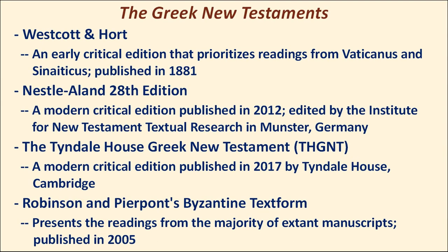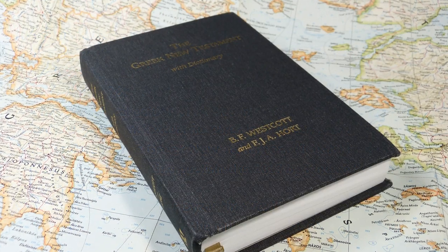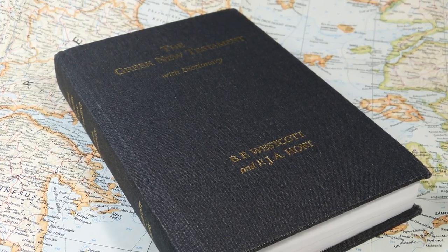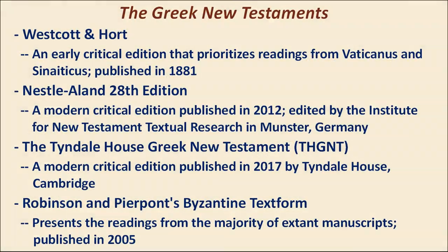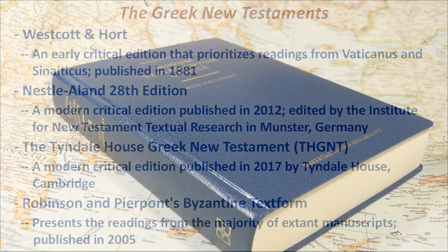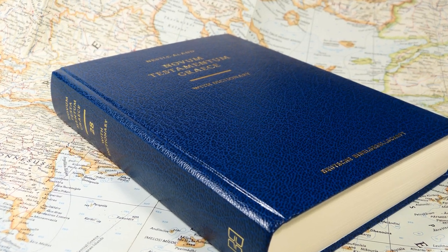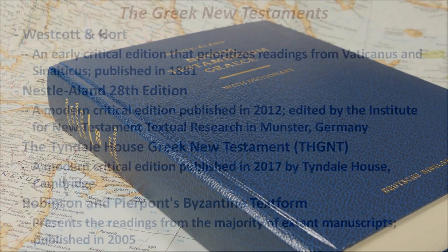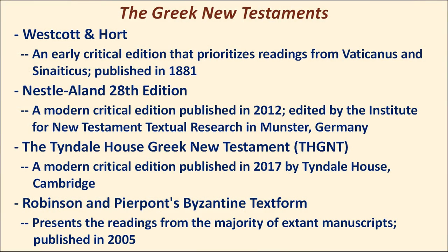These are the Greek New Testaments we'll be talking about. Westcott and Hort, which has been demonized quite a lot in literature and in YouTube videos over the years. It focuses on readings from Vaticanus and Sinaiticus and was published in 1881. The Nestle-Aland 28th edition came out in 2012 and is only slightly different in its text from the 27th and 26th editions, so the text essentially has been fairly constant since the late 1970s.